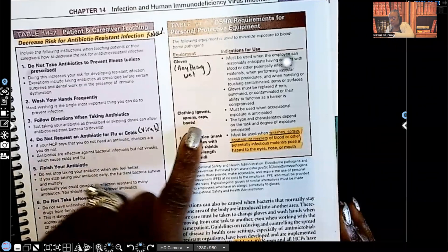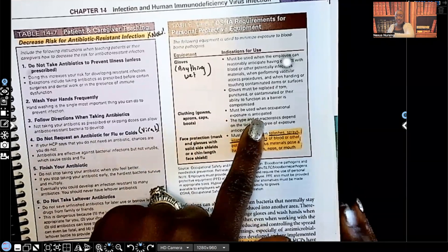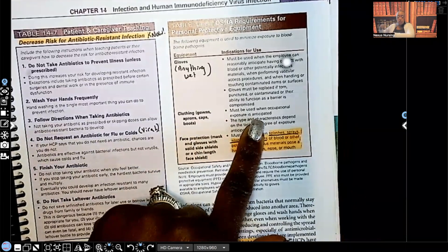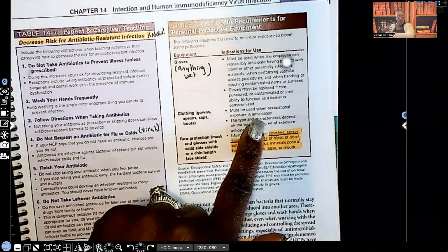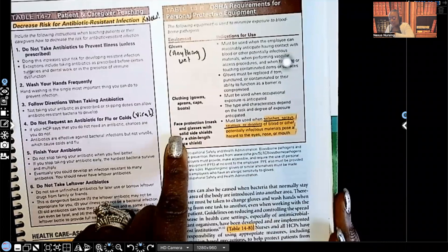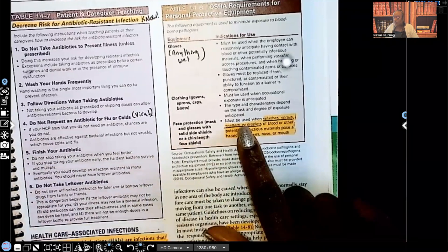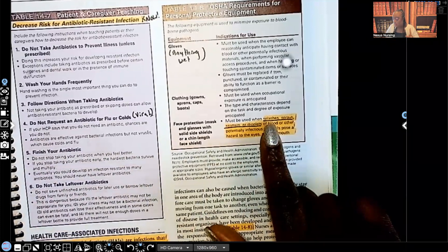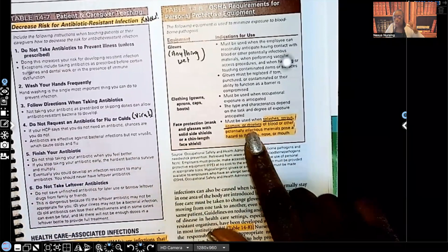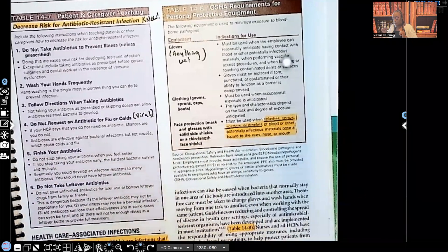Clothing such as gowns, aprons, caps, boots. These must be worn when occupational exposure is anticipated. If you anticipate getting blood or urine or whatever it is on your clothes, you should gown up. Face protection such as masks and glasses with solid face shields or chin-length face shields. This must be used. Look at this. When splashes, sprays, spatters, or droplets are expected. Okay. So this is important for you to know.